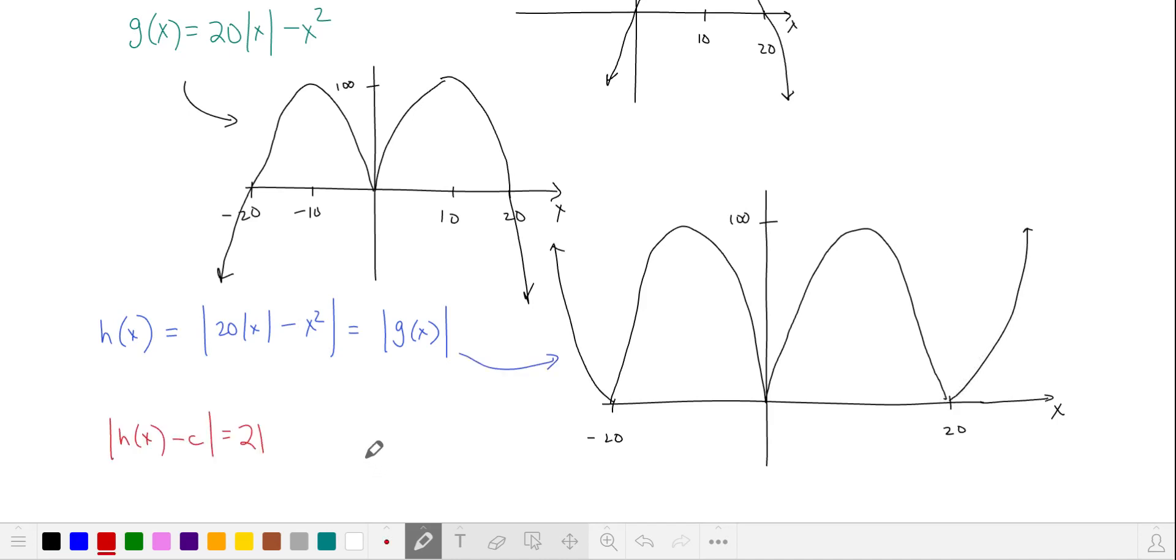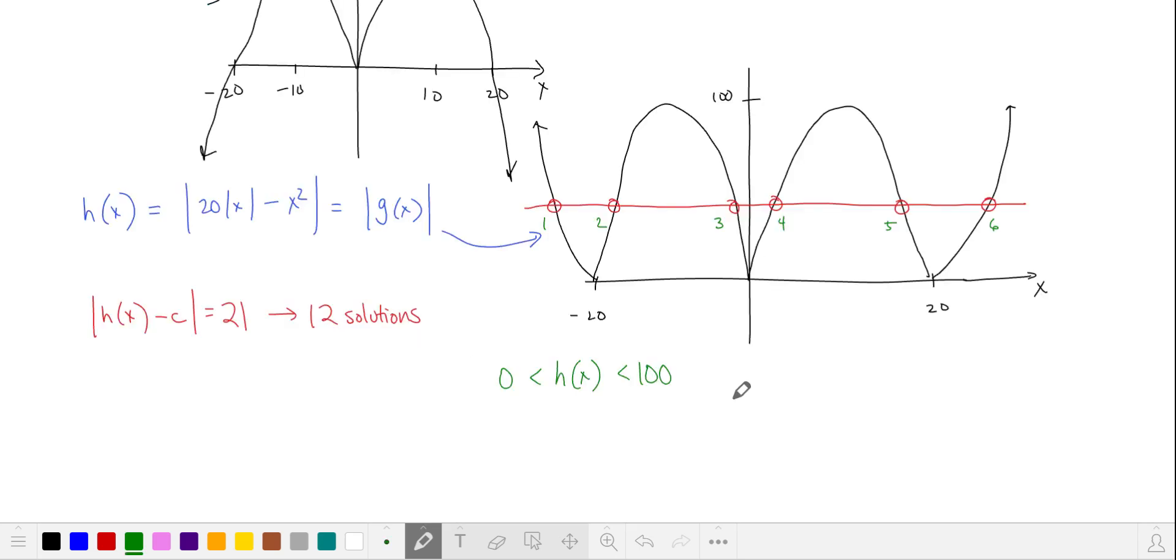So our equation becomes the absolute value of h of x minus c is equal to 21, and this has 12 solutions. We notice that when h of x is between 0 and 100, it has 6 solutions.